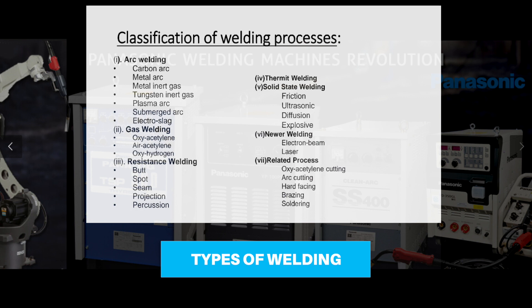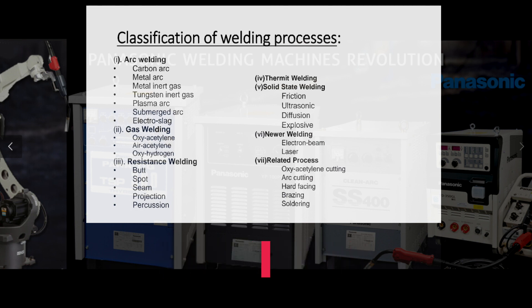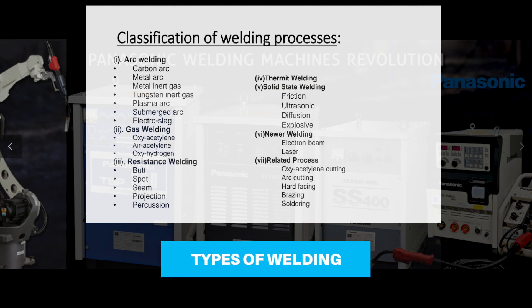Metal Inert Gas welding is called MIG. MIG's full form is Metal Inert Gas — it means a gas is used, either CO2 or a mixed gas. That is why we call it Metal Inert Gas. Then there is Tungsten Inert Gas welding, which is called TIG. TIG's full form is Tungsten Inert Gas.